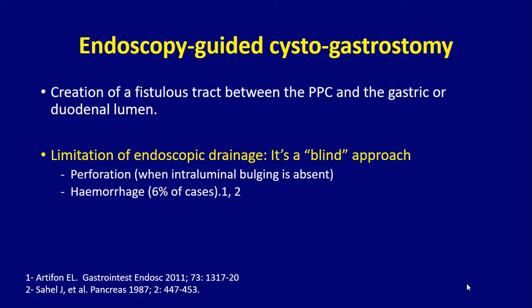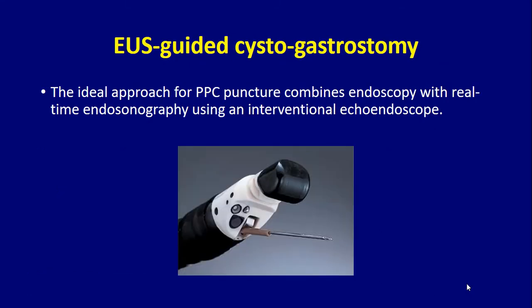Endoscopic-guided cystogastrostomy has been performed for quite some time, creating a fistulous tract between the pseudocyst and the gastric or duodenal lumen. Limitations of the conventional endoscopic procedure include it being a blind approach, with perforation and hemorrhage not being rare. Recently, EUS-guided cystogastrostomy has become the gold standard, using a linear echoendoscope to puncture the cyst and insert a stent — with metal stents markedly improving patient outcomes.